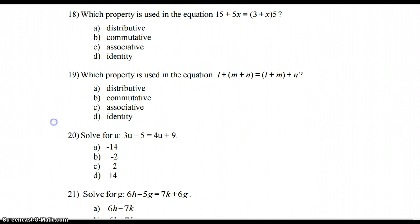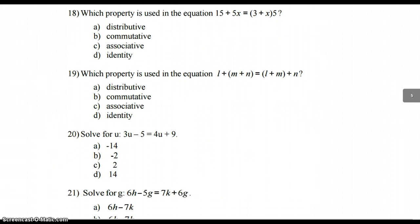Number 19, which property is used in this equation? It looks like we want to check order first. Does it go L, M, N? L, M, N. Yes, it does. But the parentheses shift. And whenever the parentheses shift, that is the associative property.